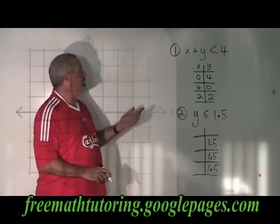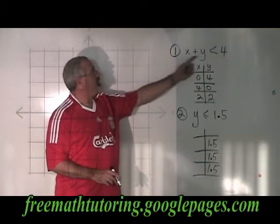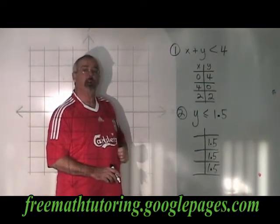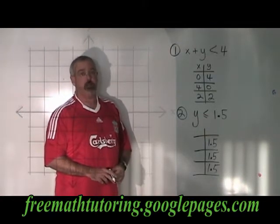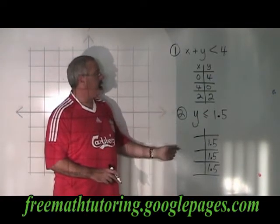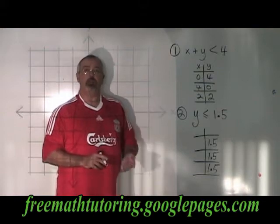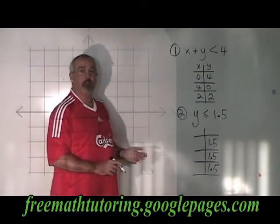In this system, I have x plus y is less than 4 as my first equation, and y less than or equal to 1.5 as my second. I've made these table of values for both, and I'm going to put the lines on the graph map.